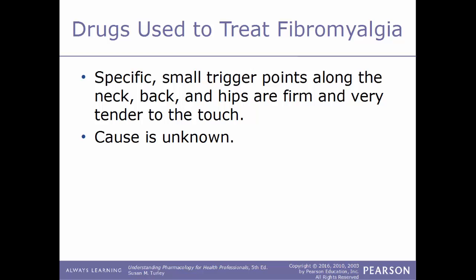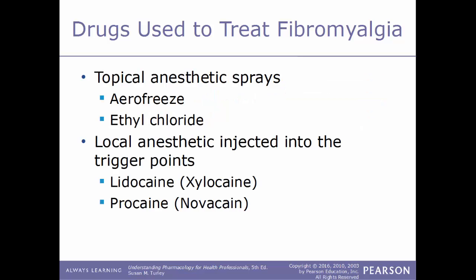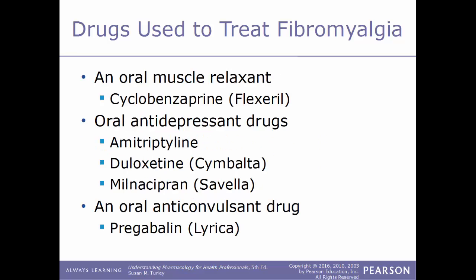Now we'll move on to drugs used to treat fibromyalgia. The cause of fibromyalgia is currently unknown, and it is diagnosed by very specific trigger points throughout the body — including the neck, back, and hips — that are very tender to the touch. Treatment options include: topical anesthetic sprays such as Aero Freeze or ethyl chloride; local anesthetics injected into trigger points such as lidocaine (Xylocaine) and procaine (Novocaine); oral muscle relaxants such as cyclobenzaprine (Flexeril); oral antidepressants such as amitriptyline, duloxetine (Cymbalta), and milnacipran (Savella); and oral anticonvulsants such as pregabalin (Lyrica). That brings us to the end of chapter nine on musculoskeletal drugs; we will continue with chapter ten on respiratory drugs.